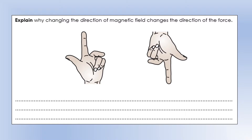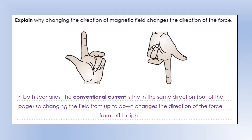Why does changing the direction of the external magnetic field change the direction of the force? We'll use Fleming's Left Hand Rule to explain it, though we could also use superposition of fields. In these diagrams, the conventional current is the same in both — coming out of the page, so your middle finger points out of the page. If you change the field from going up to down, the force switches from left to right, demonstrating a changed direction of magnetic force.